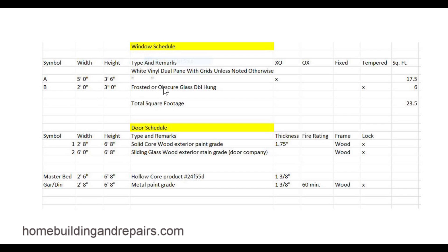Obscure glass is not so common on a two-story, but would definitely be something you'd want on a single-story where people could be walking around outside. The call out could also specify a particular style, like white vinyl dual pane with grids. I tried to put in a bunch of different things here that you might find on the plans.